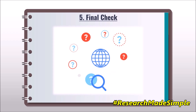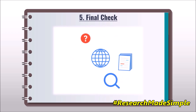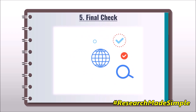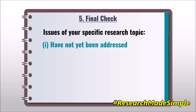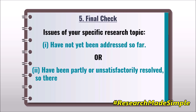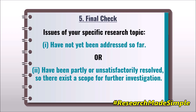The fifth and final step is the final check. Here, you need to check whether the narrowed specific topic satisfies any one of these two conditions: first, the issues of your specific research topic have not yet been addressed so far — if yes, you can go ahead with this topic; or second, the issues have been partly or unsatisfactorily resolved, meaning there exists scope for further investigation — in this case also, you can take your research topic forward.